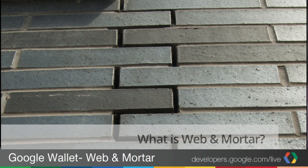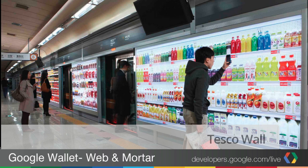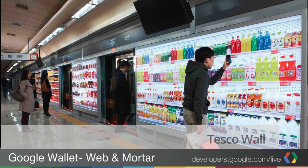So what is Web and Mortar? It's an idea built from the Tesco wall. Web and Mortar is this concept of tying the online and offline shopping experiences together. The most amazing thing about this image isn't that people are buying groceries in the subway station in Seoul, but it's that they have the cell signal to do so — I'm looking at you, San Fran.